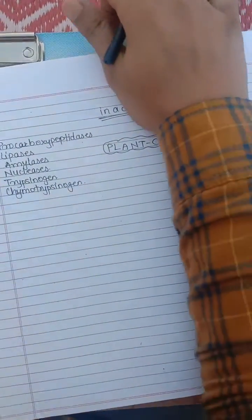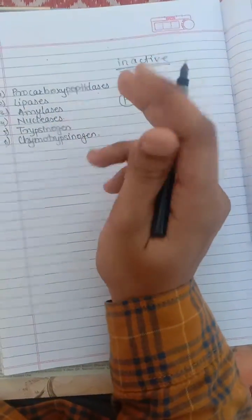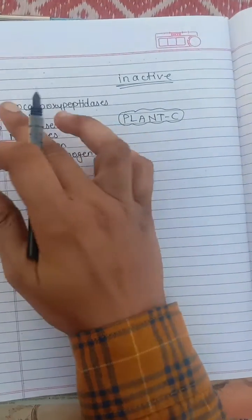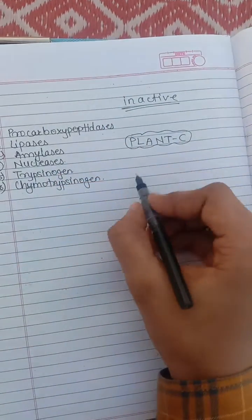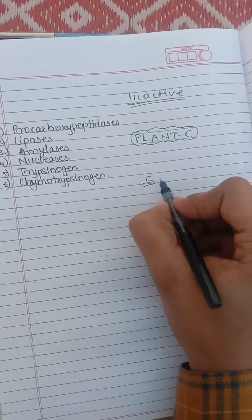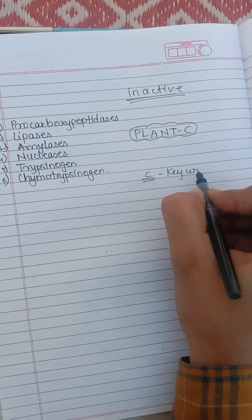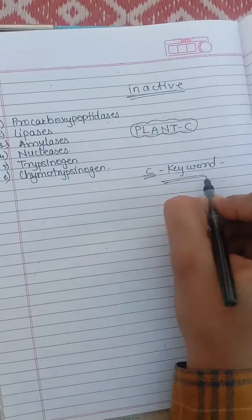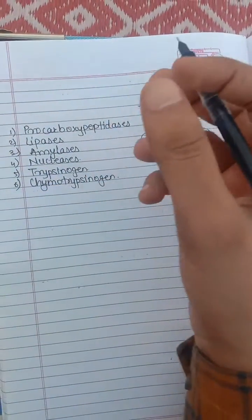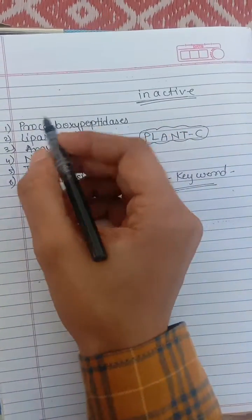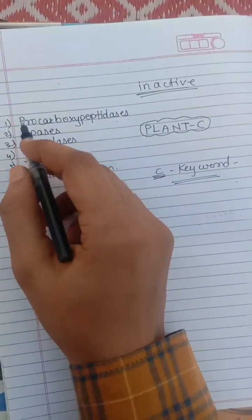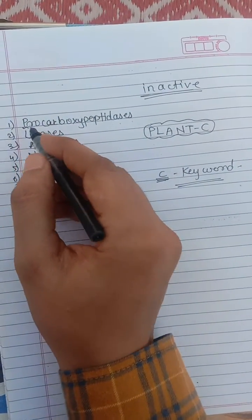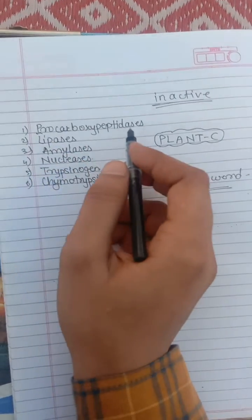The key is to see the beginning of each enzyme. 'See the beginning' means to look at the first letter of each enzyme: procarboxypeptidase P, lipases L, amylase A, nucleases N, trypsinogen T, and chymotrypsinogen C.